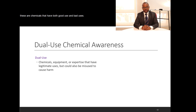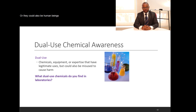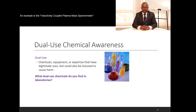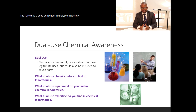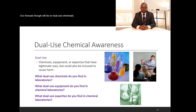Dual-use chemicals are chemicals that have both good uses and bad uses. They could also be equipment in the labs — we call this dual-use equipment — or they could involve human beings, which we call dual-use expertise or persons: people who can either choose to do good or do bad. An example is the inductively coupled plasma mass spectrometer (ICP-MS), which is used for testing the presence of certain elements. However, the same equipment can be used to enrich uranium. Our focus, though, will be on dual-use chemicals.